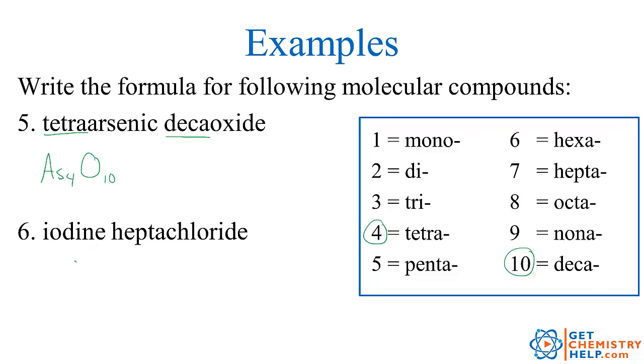Iodine. Well, there's no prefix. So we just assume that means just one iodine. Heptachloride. Hepta is from seven. So seven chlorines. ICl7.